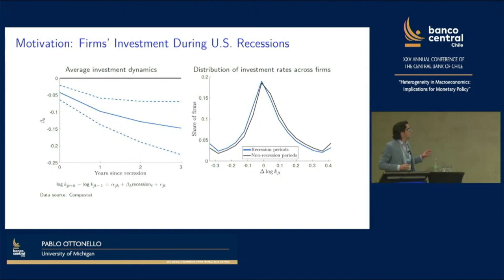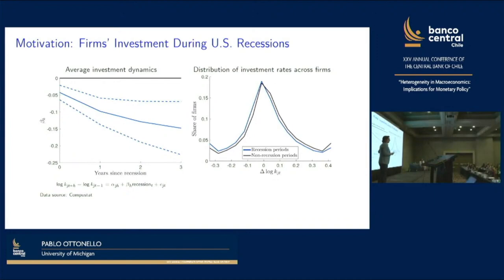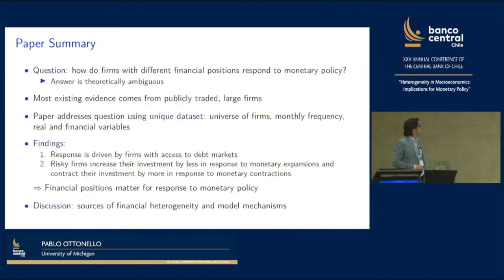This figure shows the dynamics of investment from CompuStat firms during the last three recessions pre-COVID. On the left panel, you have the average investment dynamics of firms — you see a contraction of investment. On the right panel, you have the histogram of investment rates in recession periods and non-recession periods. You see basically a massive amount of heterogeneity across firms. This is of first-order importance from the perspective of thinking, for example, of policies. And this is what the paper asks.